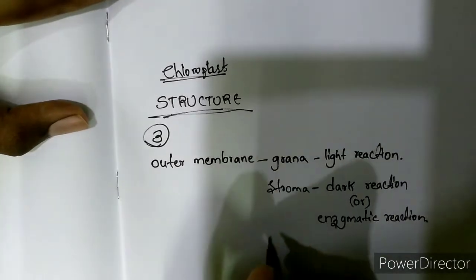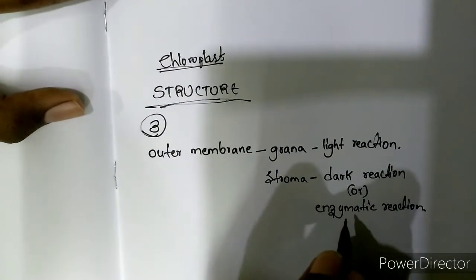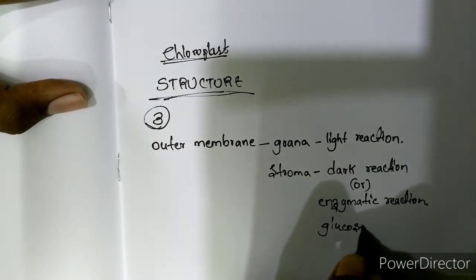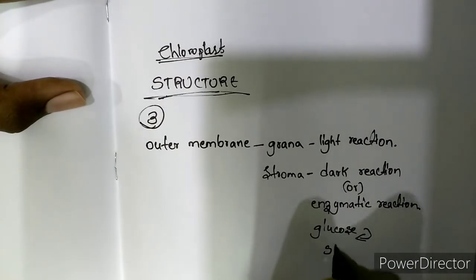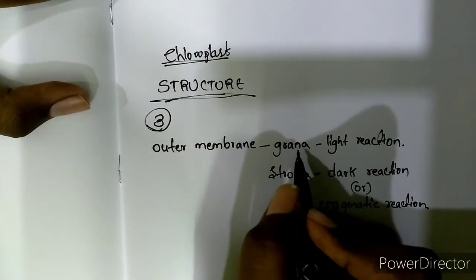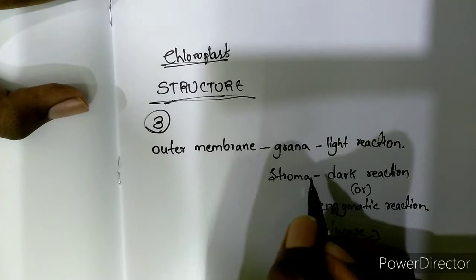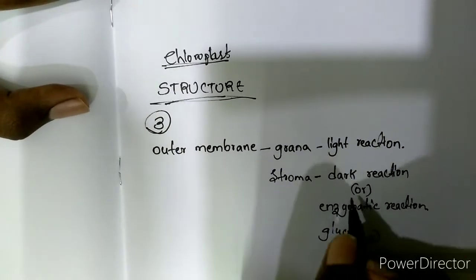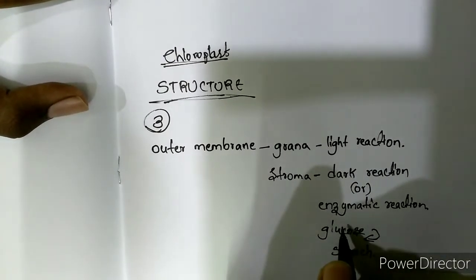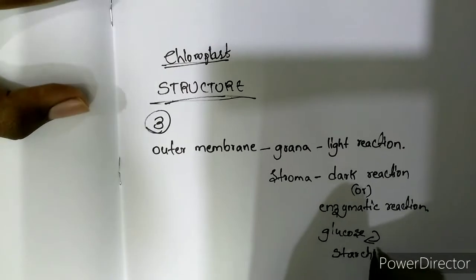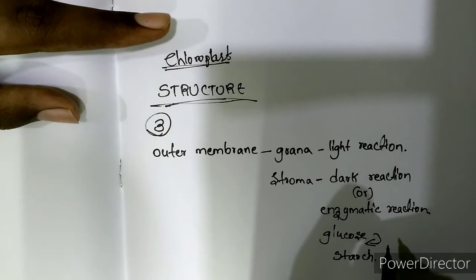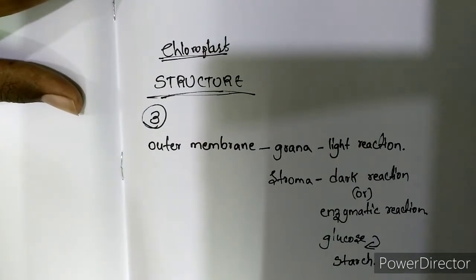Stroma is quite opposite to grana. Due to this enzymatic reaction, glucose is produced, and this glucose will be converted into starch. So we can say that chloroplast plays an important role in preparation of food in plants. This is about the structure of chloroplast.